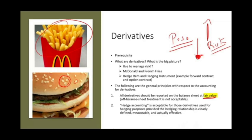Hedge accounting is acceptable for those derivatives used for hedging purposes, provided the hedging relationship is clearly defined, measurable, and actually effective. We can use hedge accounting — it's optional — but if we happen to use it, we have to follow hedge accounting rules. It's acceptable if the derivative is used for a hedging relationship and it's clearly defined, measurable, and effective.